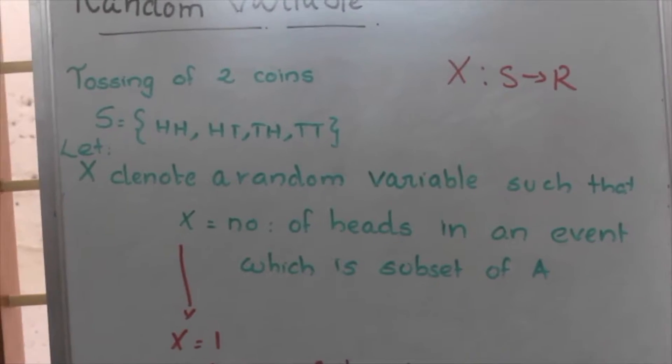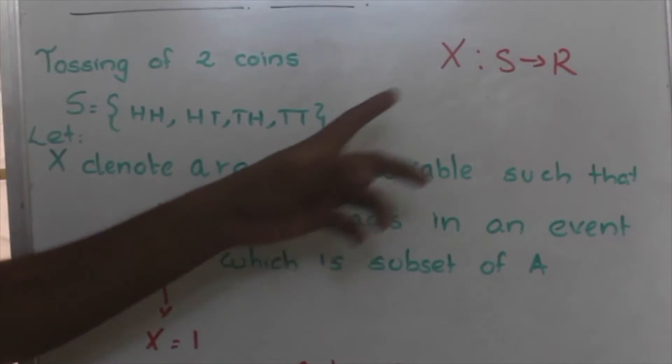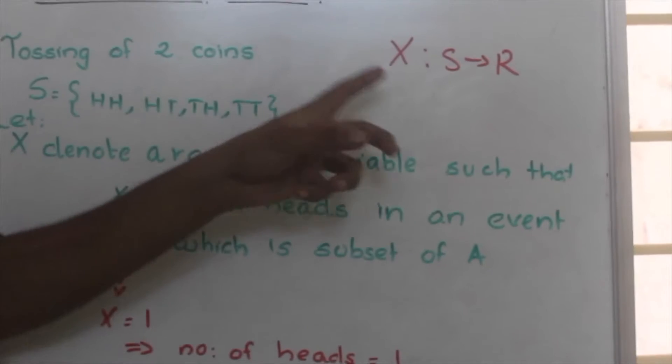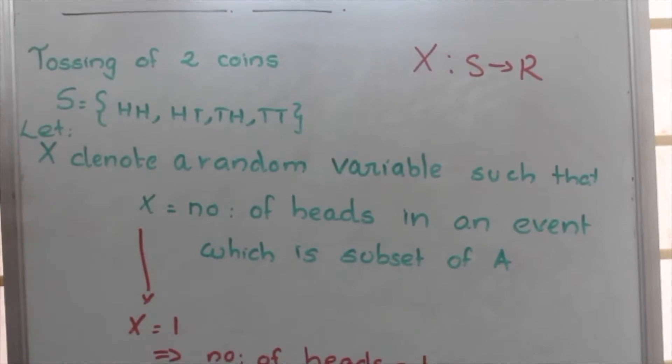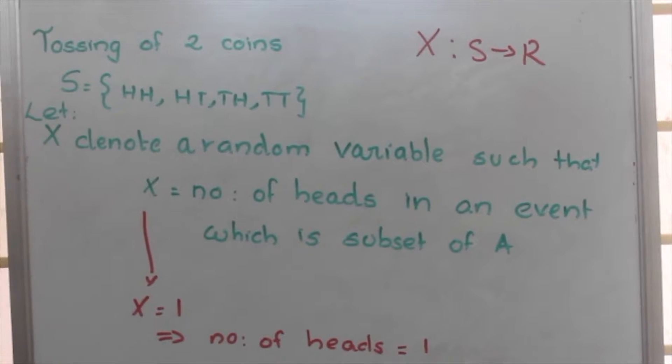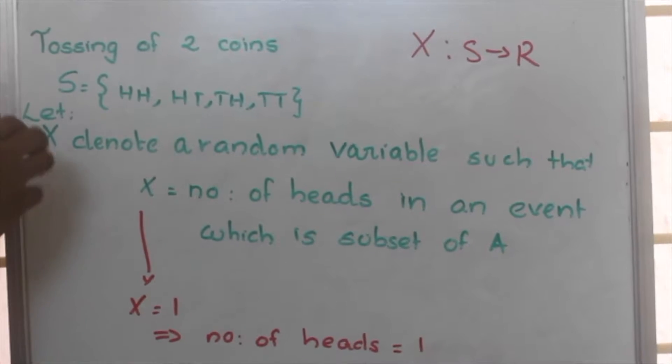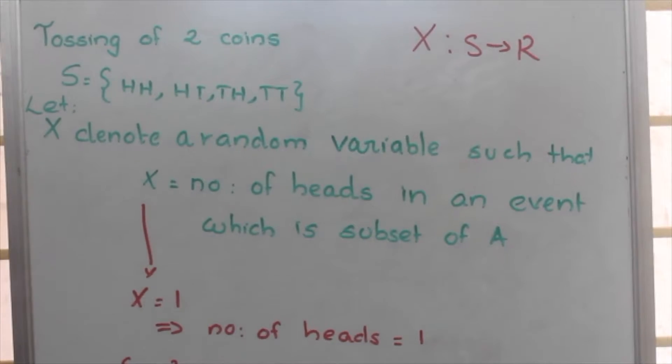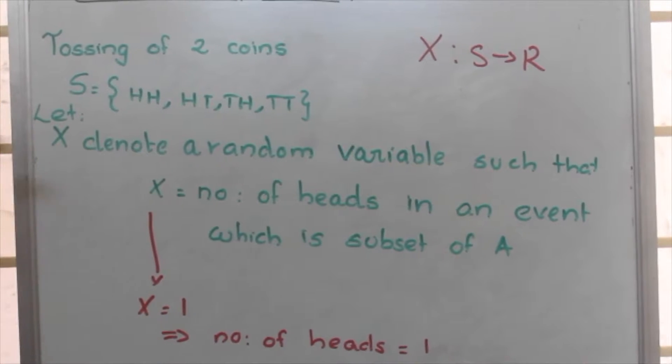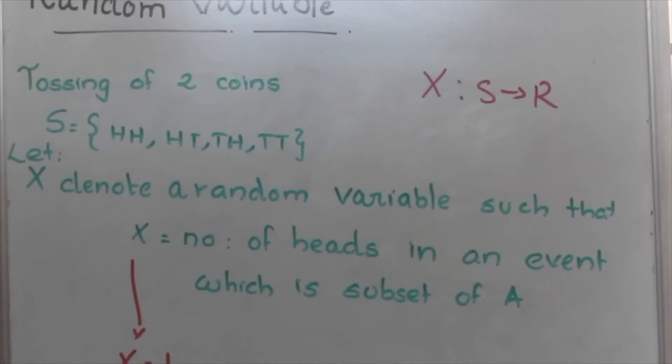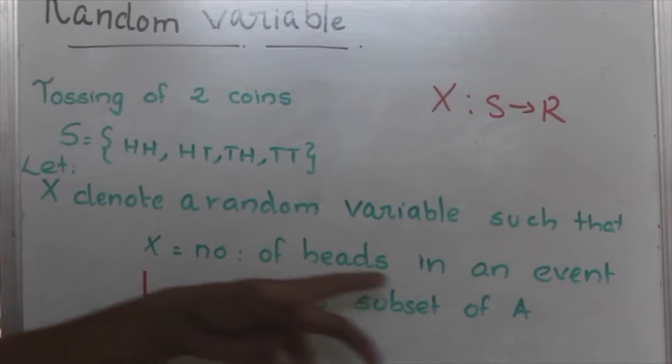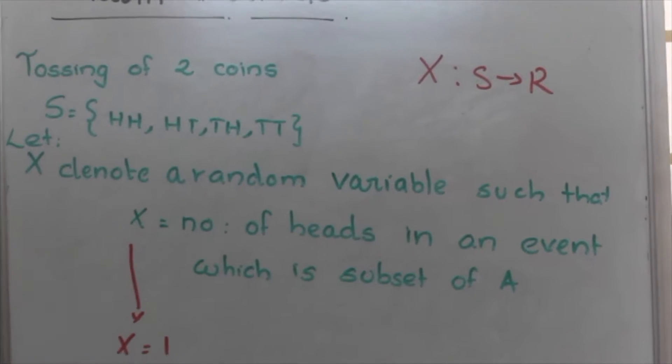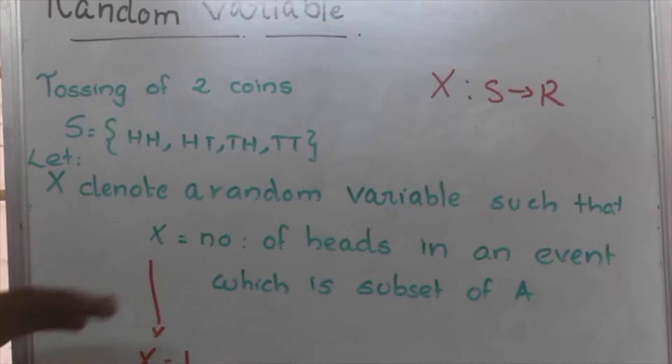Random variable means random variable X is defined as a relation from S to R. That is, R is real number. X denotes a random variable such that X equals number of heads in an event which is subset of S.